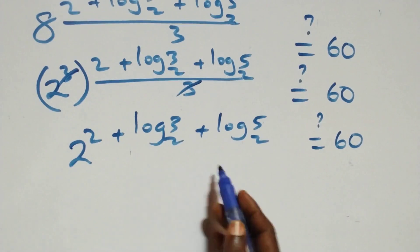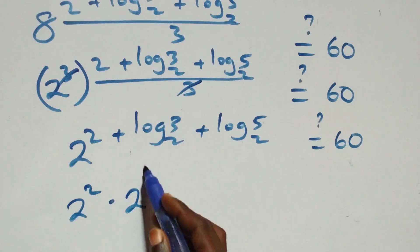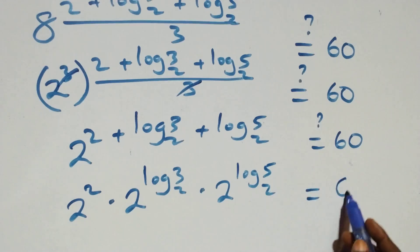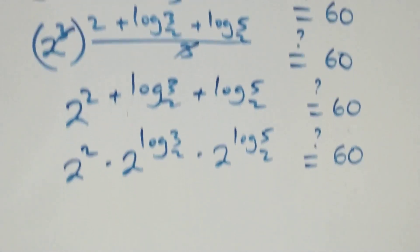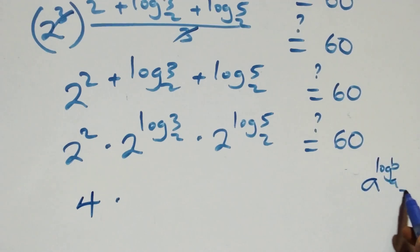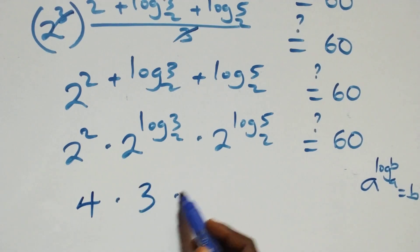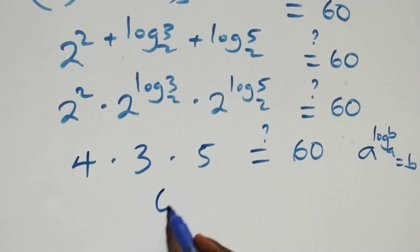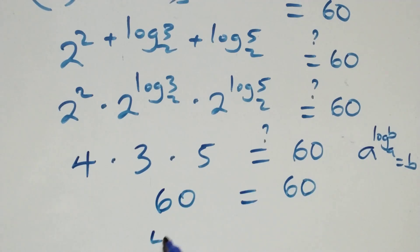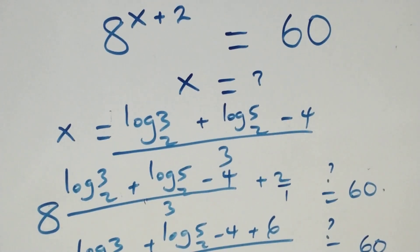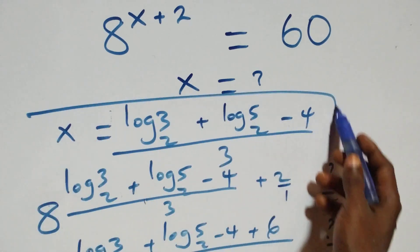Here, 6 minus 4 is 2, so the exponent simplifies and we can write it as 2 cubed raised to the power of (2 plus log₂3 plus log₂5) all over 3. The 3 in the denominator and the cube cancel each other, leaving 2 raised to the power of 2 plus log₂3 plus log₂5. From the law of indices, this equals 2² times 2^(log₂3) times 2^(log₂5). Since 2^(log₂b) equals b, this becomes 4 times 3 times 5 equals 60, which equals 60 on the right-hand side. Therefore we conclude that x equals (log₂3 plus log₂5 minus 4) all over 3 satisfies the given problem.